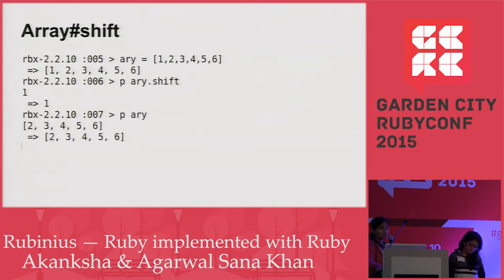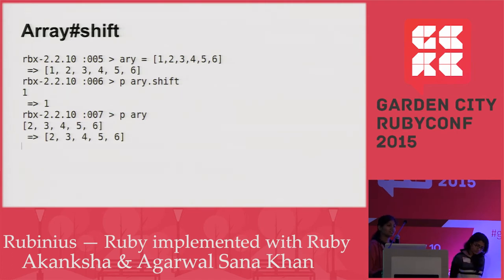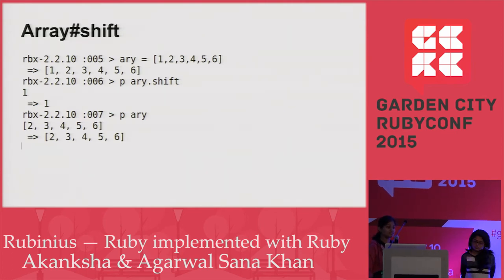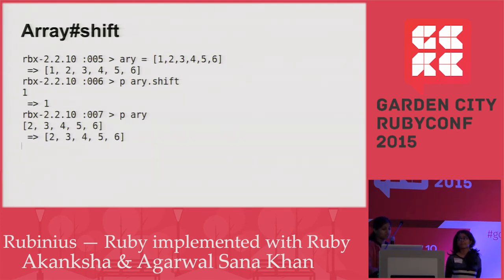We'll also look at the implementation of the array shift method, whose implementation contains some methods written in C++ rather than Ruby. What this function does is it works like a queue. If you pass a parameter to shift, it pops out that many elements from the start. If you don't pass a parameter, it just pops out one element.